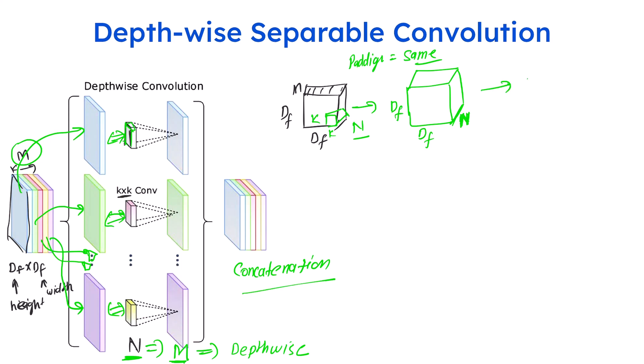In standard convolution, you do a summation of the filter values multiplied across the df spatial dimensions, and you apply n filters total. But in depthwise convolution, that is not happening in the same way. So how is this going to help us improve training and run on mobile devices? It actually saves the number of parameters.